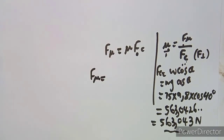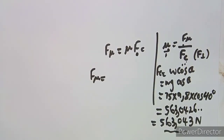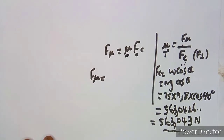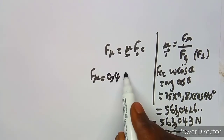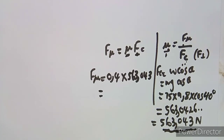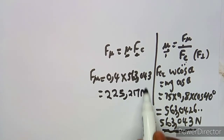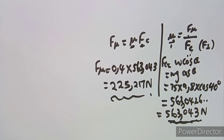Now we calculate the frictional force using the formula: frictional force = μ × fc. We have μ = 0.4 and fc = 563.043 N. So frictional force = 0.4 × 563.043 = 225.217 N. This is not our final answer — we still need to use this to find F_up.